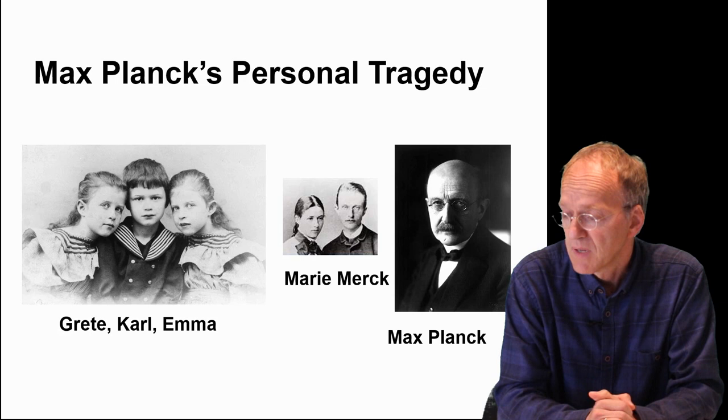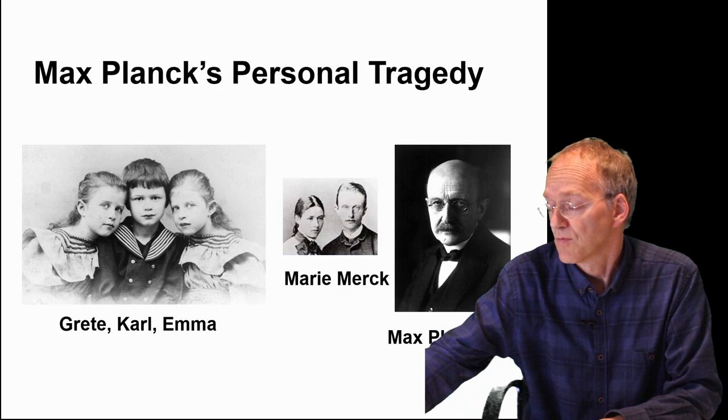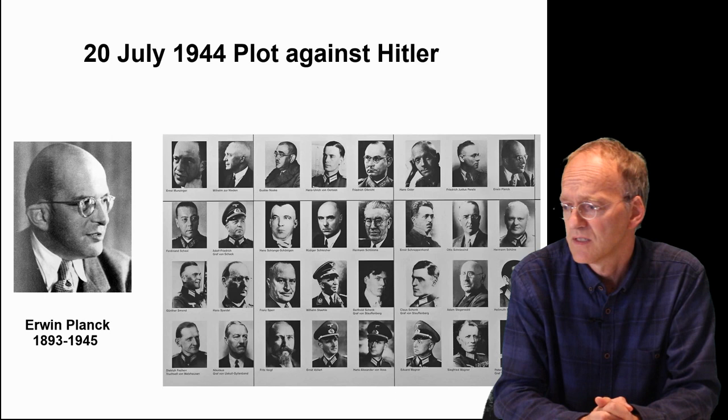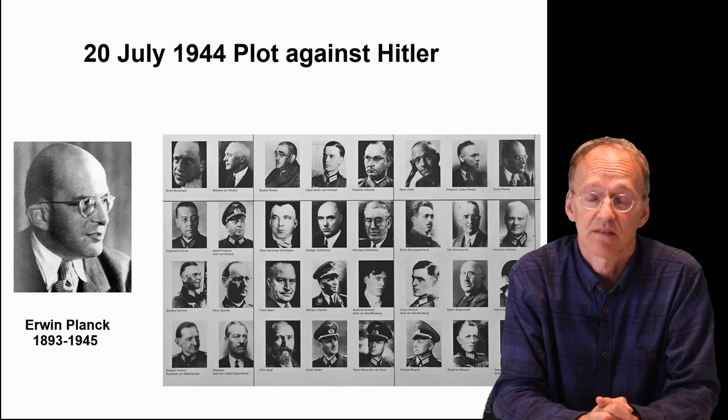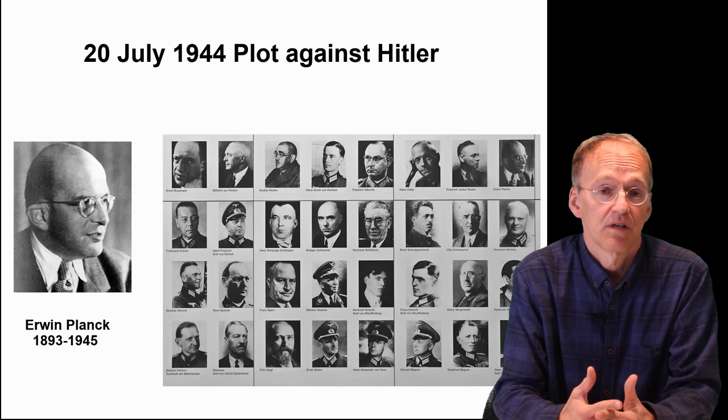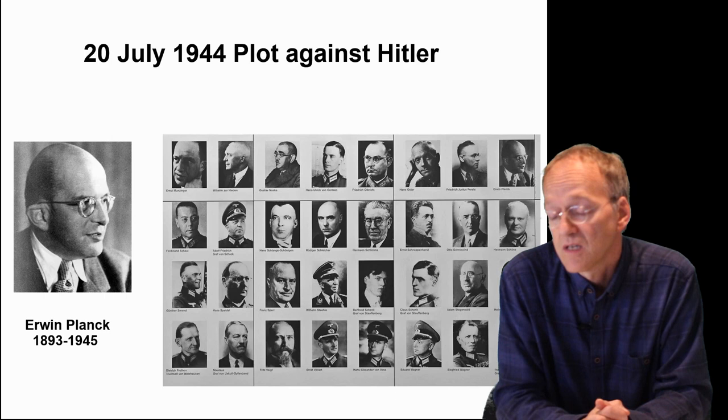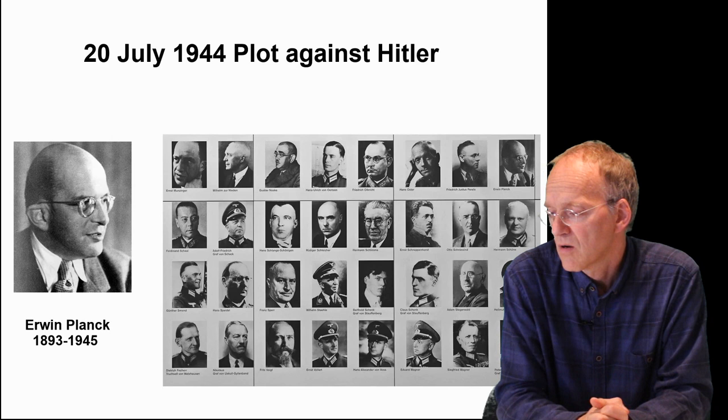This is really crazy, but it's not enough. His remaining son Erwin took place in a plot against Hitler on July 20, 1944, and despite the 86-year-old Planck asking for mercy, Hitler personally ordered the execution of Erwin Planck in early 1945. Planck had also earlier very courageously opposed the expulsion of Jews from German universities, and maybe this contributed to this tragic course of events.